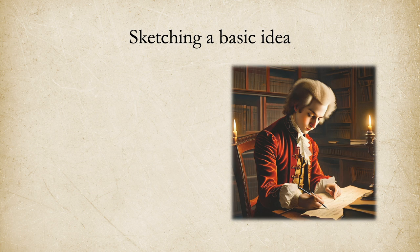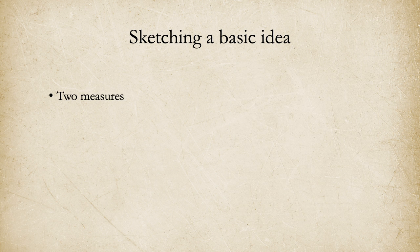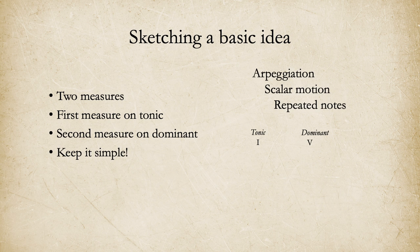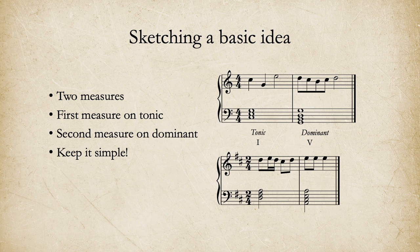The first thing we need is an idea which we can develop. In classical music theory, there's a term for the basic idea which starts a phrase — it's called the basic idea. I recommend making a basic idea which is two measures: have the first measure on tonic, the second on dominant, and keep it really simple. You might have an arpeggiation or a little scalar motion; just having a few repeated notes is enough. Even if you feel it's too simple, that's okay, because we can still embellish it later. Here are two examples: the first has an arpeggio of the tonic and then scalar motion between chord tones on the dominant; the second has an upper and lower neighbor to a chord tone, then some repeated notes.